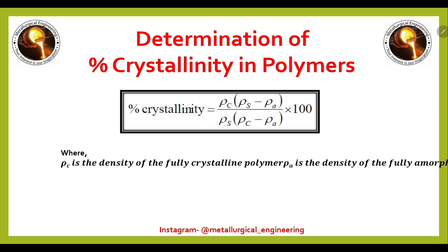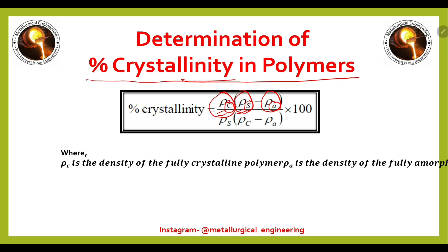We will see one more important formula for the percentage crystallinity in polymers. Percentage crystallinity is defined using the density for the crystalline polymer, the density for the specimen, and the density for the amorphous phase. This formula is used for determining the percentage crystallinity in polymers.